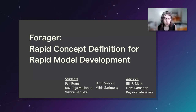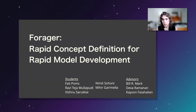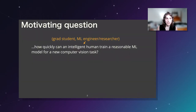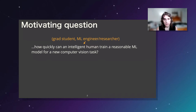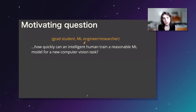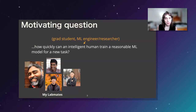Hi, thanks for the introduction. Today I want to talk about a bunch of work that I have been doing, and also a bunch of folks in my lab — something that we got interested in a couple of years ago. The question we've been focusing on is: how quickly can a grad student or ML engineer train a reasonable ML model for a new task, specifically a new computer vision task?